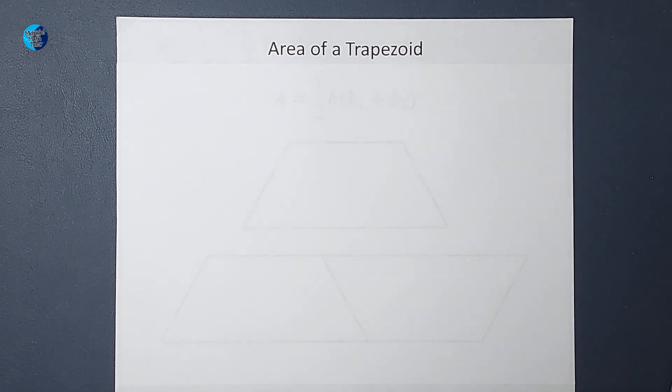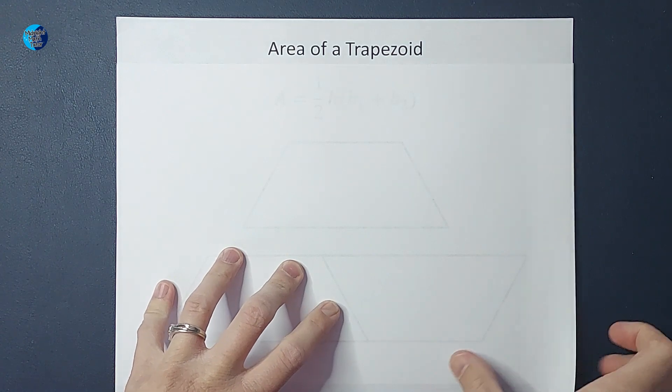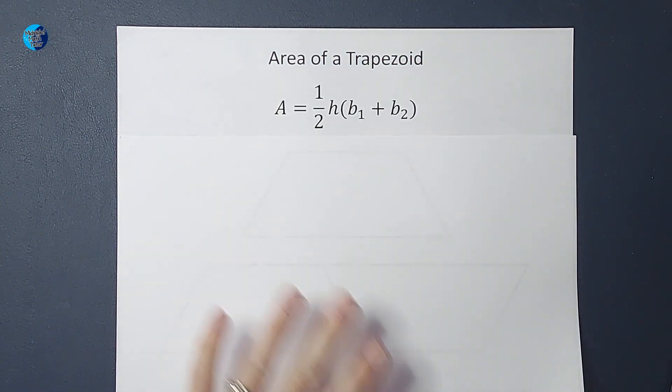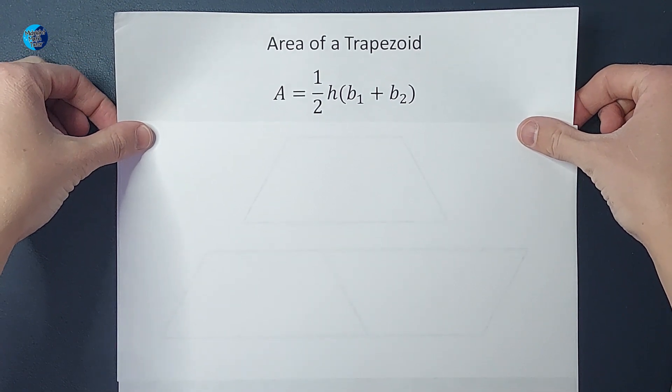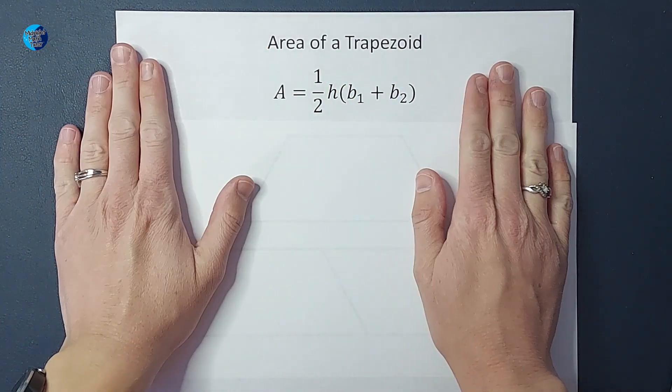Hey guys, these are some of my favorite videos when we talk about why things are the way they are. So we're going to talk about why the area of a trapezoid is one half times the height times the first base plus the second base. I said that very smoothly. You're welcome.